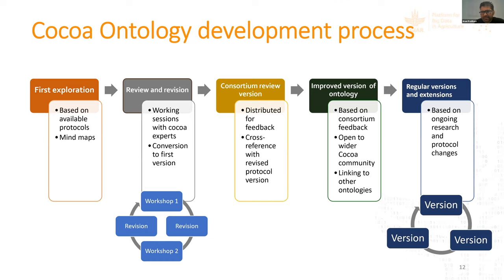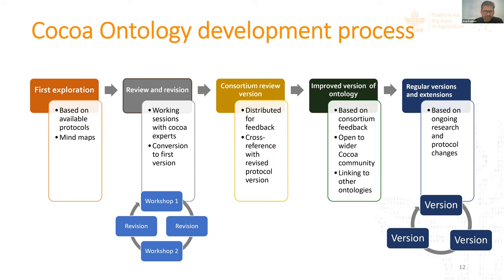We started this process in 2019, first exploring existing ontologies and protocols, and developing a small mind map. We then organized working sessions with COCOA experts and agronomists, revised our concepts, and came up with a first draft. We organized workshops within Wageningen and within the consortium, reviewed and improved the draft iteratively. The ontology has been rigorously improved over time, and now we have a more or less stable version.